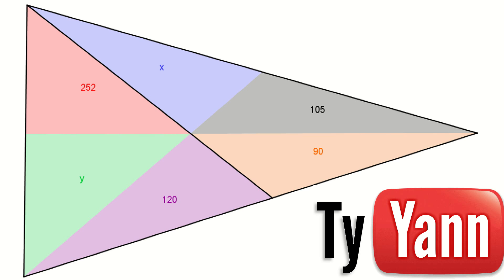Furthermore, if we check the purple triangle and the orange triangle, the purple triangle has an area of 120 and the orange one has an area of 90. But they also share the same altitude. So if we divide 120 by 90, we get also the ratio of those two bases.